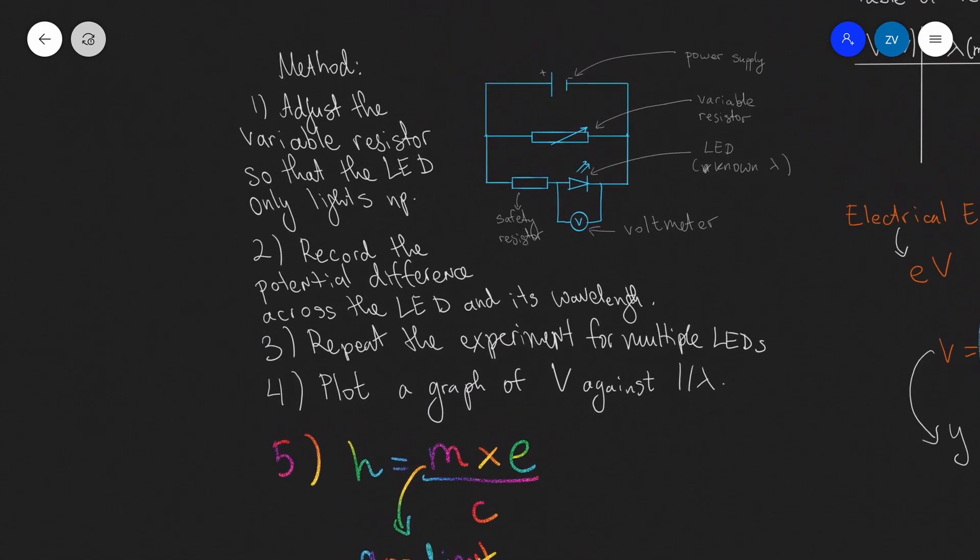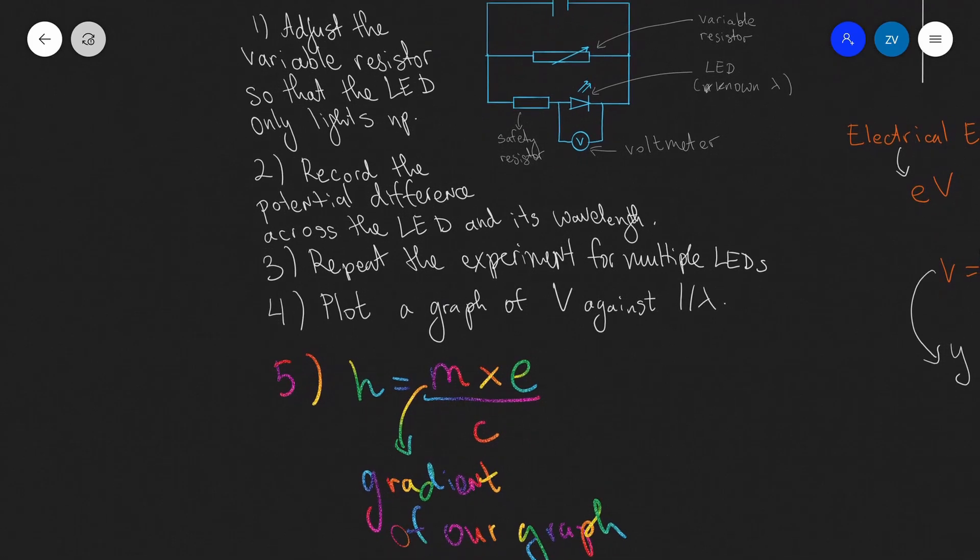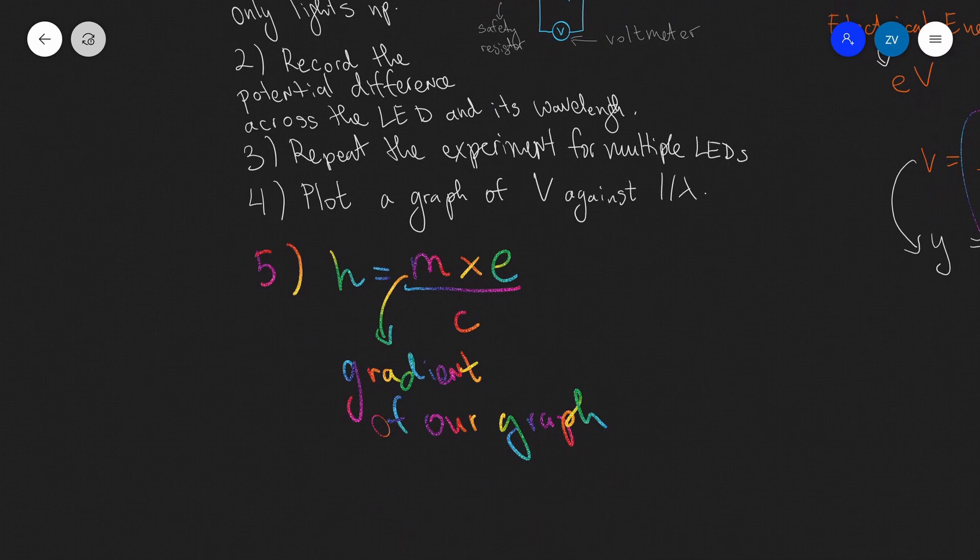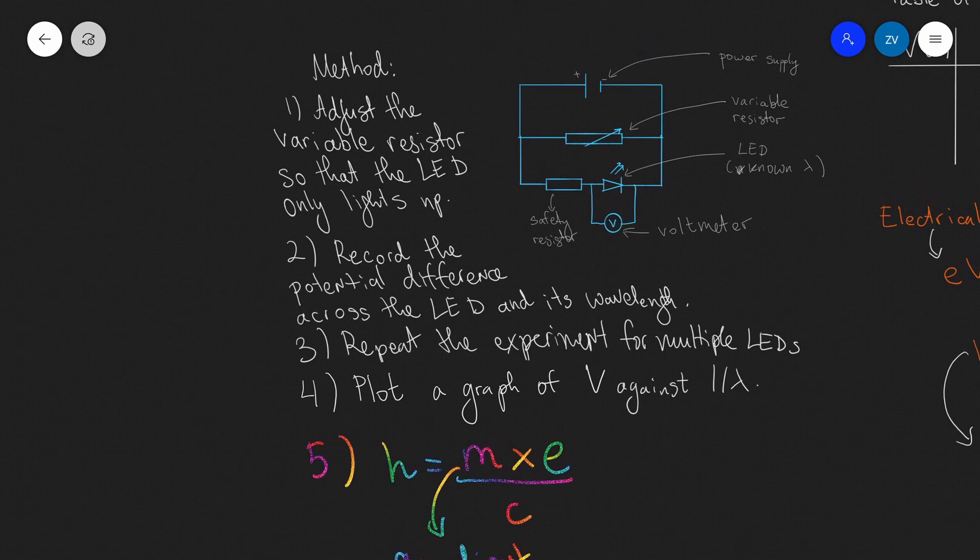Okay folks. So, just to summarize, we have the following circuit over here. We're adjusting the variable resistor so that the LED only just lights up, then record the potential difference and its wavelength. We repeat the experiment for multiple LEDs. We plot a graph of v against 1 over lambda, and using y equals mx plus c analysis, we can actually determine a value for Planck's constant. Just please be aware that in order to improve the accuracy and precision of this experiment, we need to repeat that experiment, or we need to perform this experiment in a dark room, and we will often use a cylinder positioned around the LED that we can look into and catch that precise moment that the LED is lighting up. Okay folks. So, hopefully that makes sense. If there are any questions, please feel free to drop a comment down below.